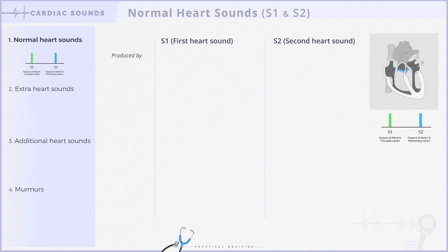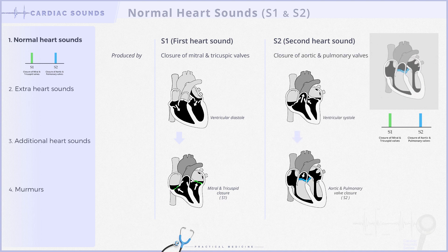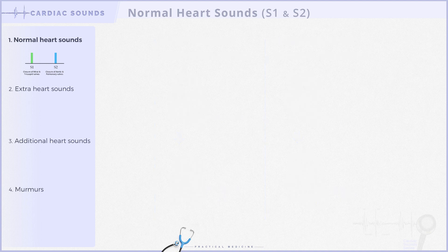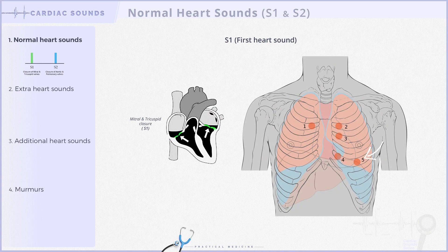S1 emerges with the closure of the mitral and tricuspid valves, signifying the end of ventricular diastole and the beginning of systole. Conversely, S2 arises as the aortic and pulmonary valves close, marking the end of ventricular systole. Let's explore each sound one by one, starting with S1. S1, generated by the closure of the mitral and tricuspid valves, is best heard at the cardiac apex.